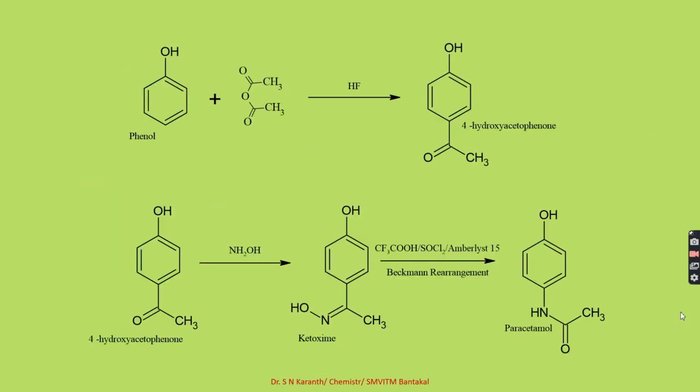To summarize the green method: phenol reacts with acetic anhydride in the presence of hydrogen fluoride forming 4-hydroxyacetophenone. The 4-hydroxyacetophenone reacts with hydroxyl amine to produce a ketoxime. Further, it undergoes Beckmann's rearrangement in the presence of Amberlyst catalyst producing paracetamol. In this way, we can synthesize paracetamol by the green method.